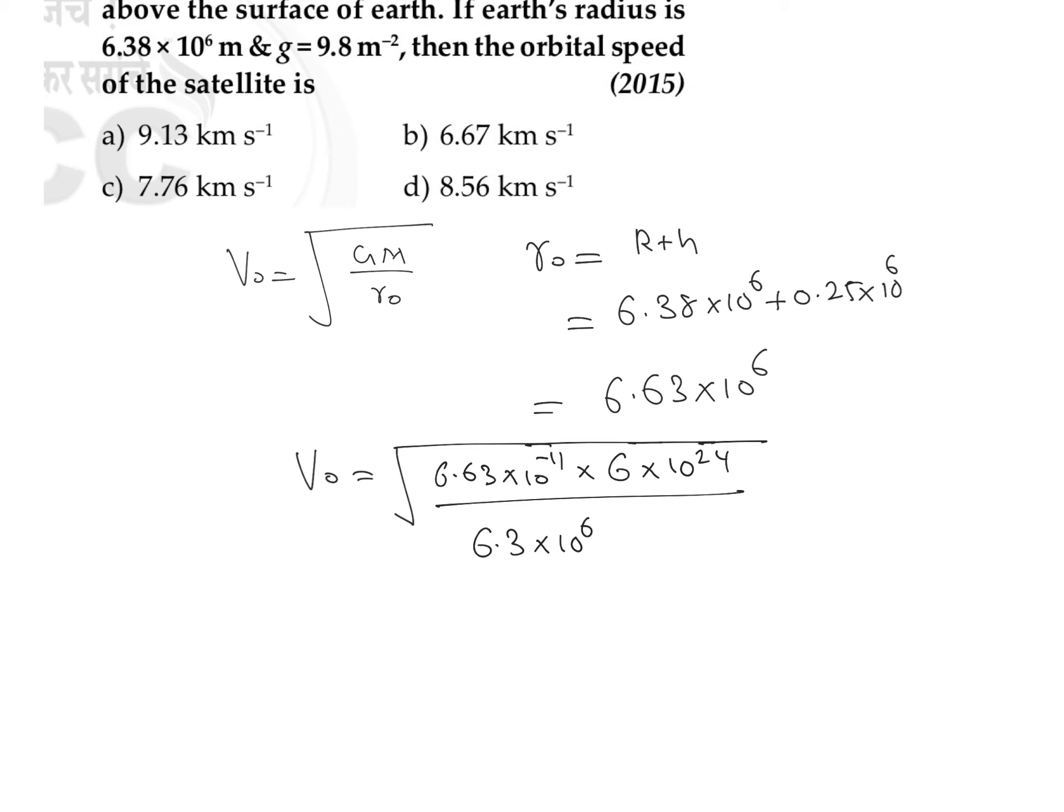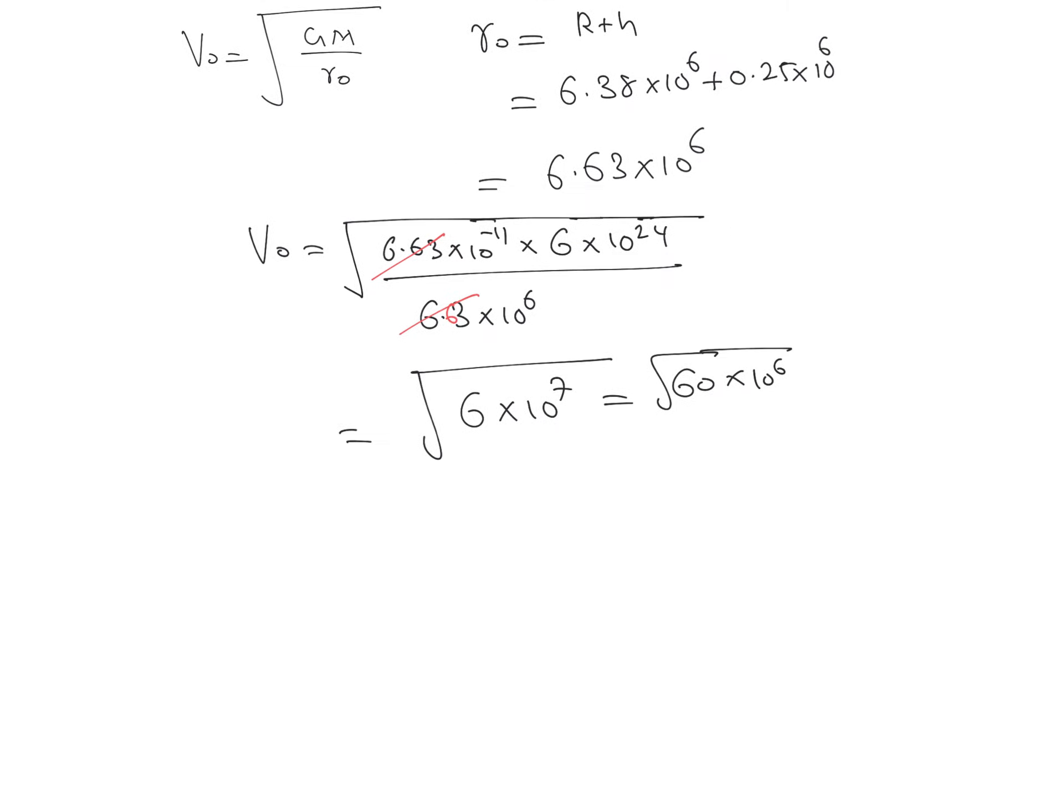So we can observe that this 6.63 and this 6.63 get cancelled. And we can write the remaining things will be equal to under root of 6 × 10⁷, or we can take it as root of 60 × 10⁶. So root of 60 you will get it as around 7.75 × 10³. So we can write the orbital velocity is 7.73 × 10³ meter per second or 7.75 kilometers per second.